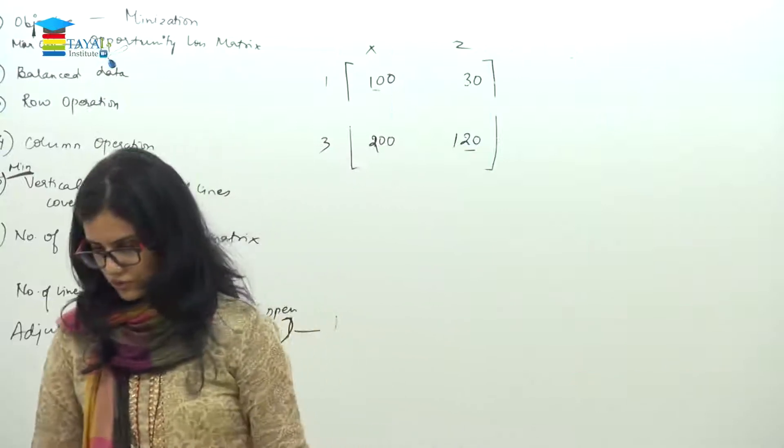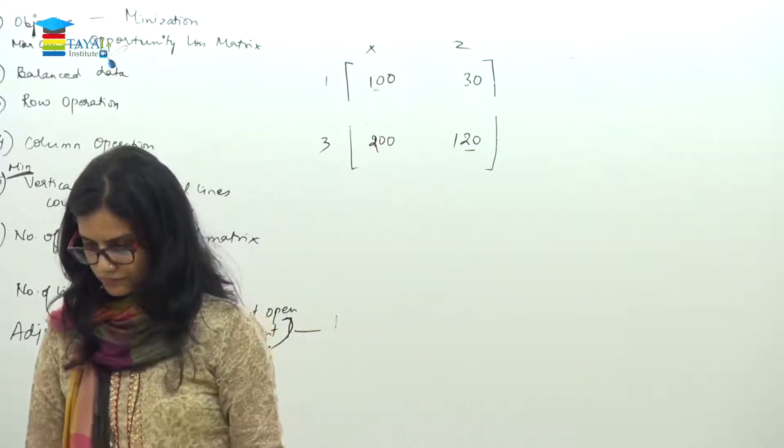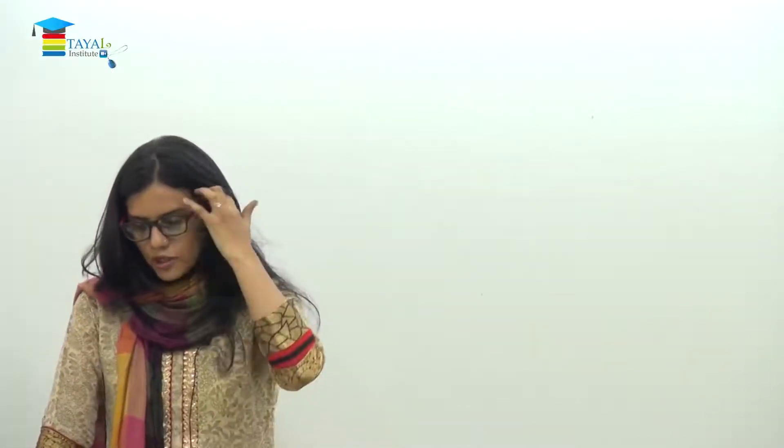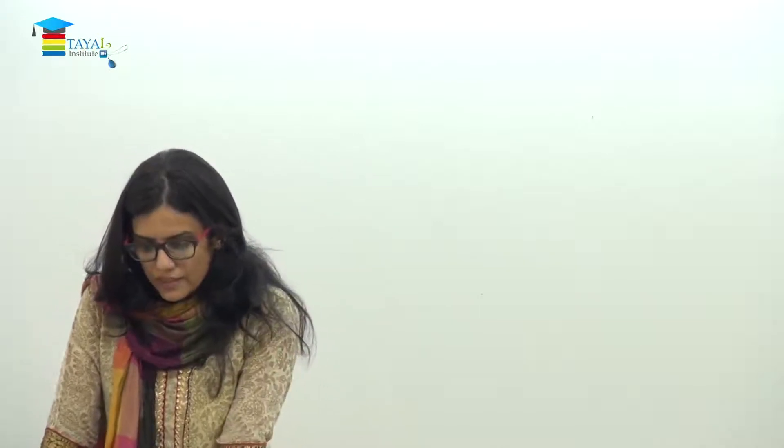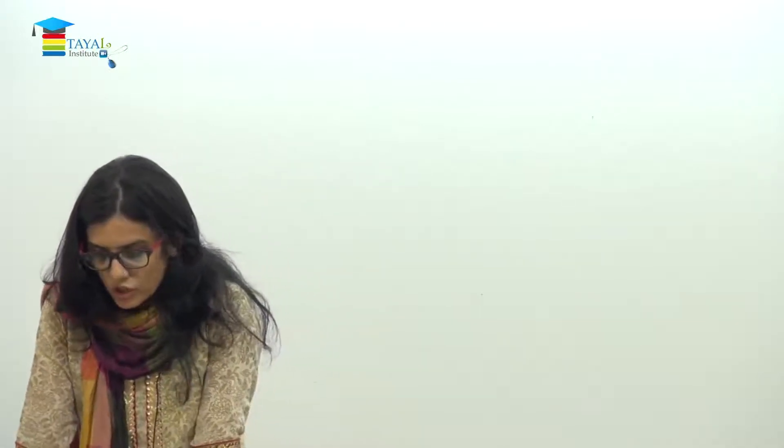Come to the first question. The cost per unit of transporting goods from the factories X, Y, Z to destinations A, B, and C — and the quantities demanded and supplied — are tabulated below.